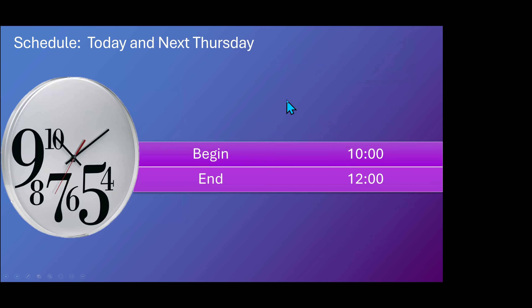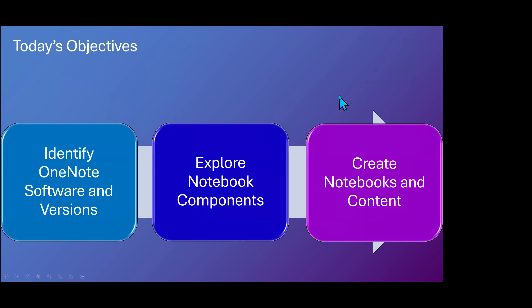As Guy mentioned earlier, this is going to be a four-hour webinar broken down into two days — today and next Thursday. We'll begin at 10 and end at 12 on both days. Here's what we're going to be doing today: we're going to identify OneNote software and its different versions. You'll understand why we want to do this in the beginning, because if you're looking at your OneNote and it doesn't look like my OneNote, there are several reasons that could be.